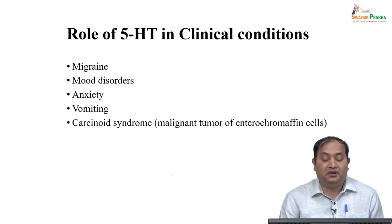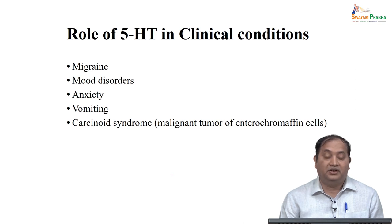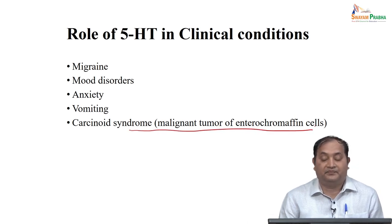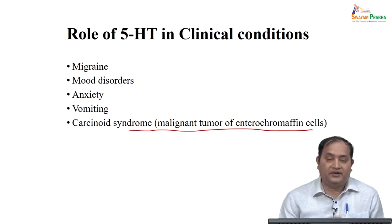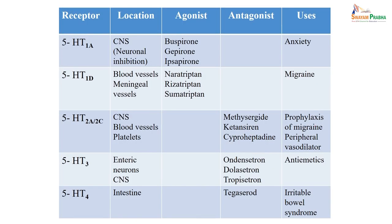When looking at the role of serotonin or 5-HT in clinical conditions, you can take the example of migraine. Drugs have been developed for mood disorders, anxiety, and vomiting. One condition is when an excessive amount of serotonin is released from the GIT due to a malignant tumor of enterochromaffin cells — patients complain of severe abdominal pain and chest tightness because it causes bronchoconstriction. This is typically called carcinoid syndrome. Let us look at how serotonin acts through different receptors and what drugs have been developed based on receptor subtypes.